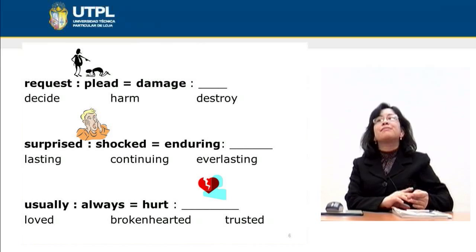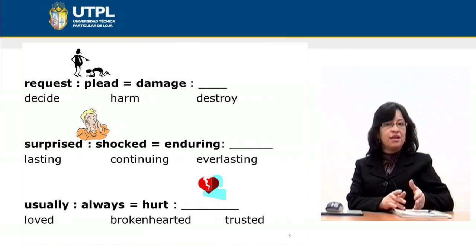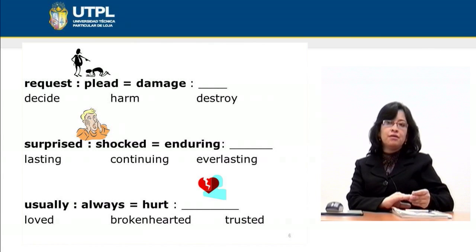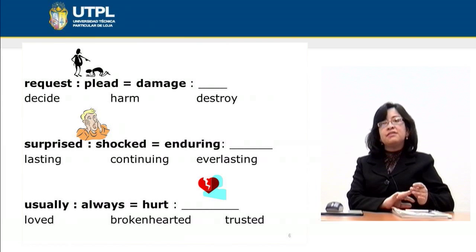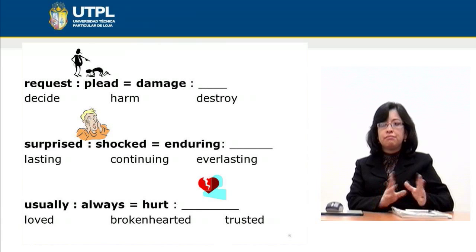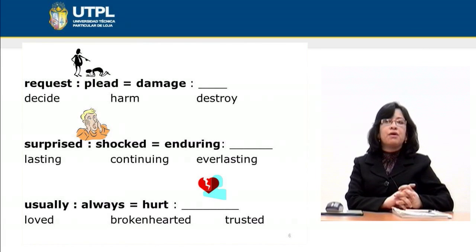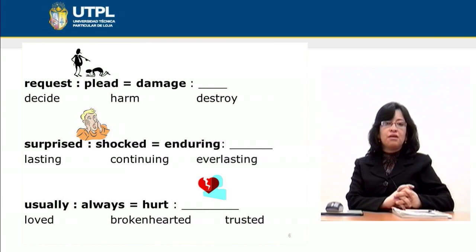In the last example, we have 'usually' and 'always.' We know that 'always' is stronger than 'usually.' Then we need to find the word to complete 'heart,' with options loved, broken-hearted, and trusted. 'Loved' and 'trusted' don't have any relevant relationship here. 'Broken-hearted' is the correct word for completing this analogy, as it represents a higher degree of intensity.